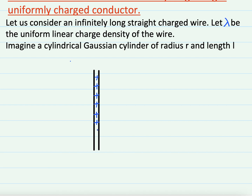We are taking positive charge here, but we can consider any type of charge — positive or negative — it doesn't matter. If you change the charge sign: for positive charge the electric field lines are radially outwards, and for negative charge the electric field lines are radially inwards.